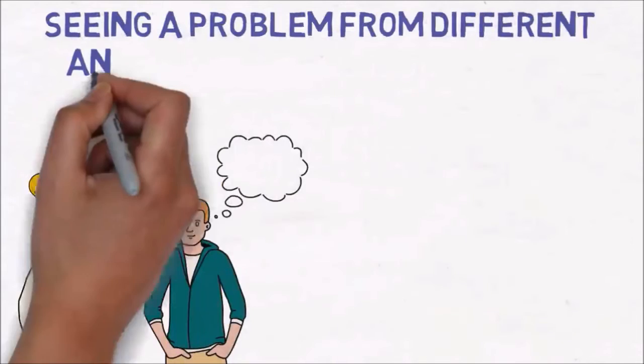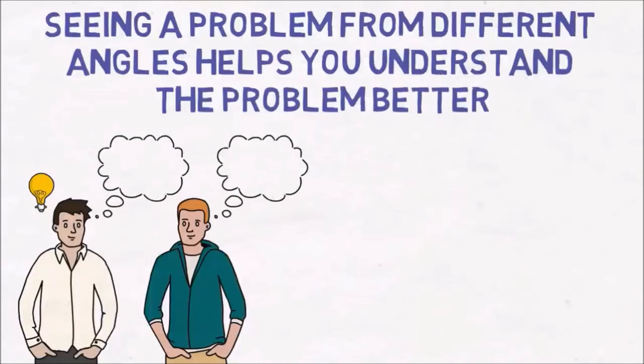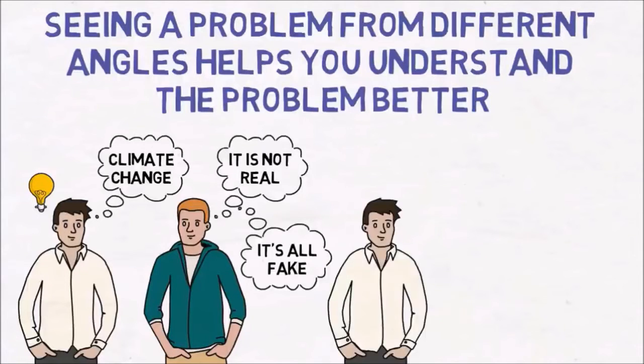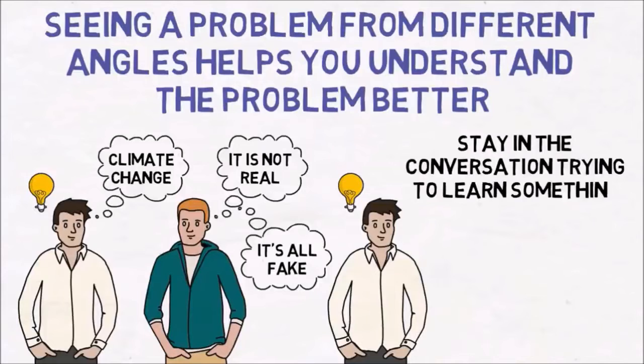Seeing a problem from different angles, even if they are not entirely correct perspectives, helps you understand the problem better. For example, consider a talk with a climate change denier. He might say false things like there is a controversy in science regarding climate change, that the reports given by the mass media are false. Instead of walking away from such a conversation, you might prove yourself to be an educated person and stay in the conversation trying to learn something, to see the issue from a different angle.